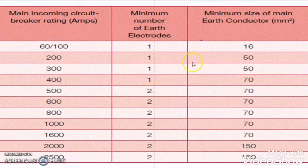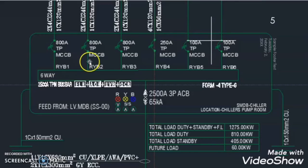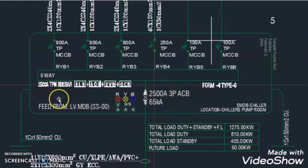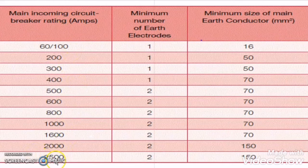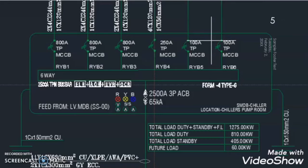Let us take some examples in order to select the minimum size of the main earth conductor. Here is the first example. The main incomer rating of this LV panel is 2500 ampere. So as per this chart, when the main incomer breaker rating is 2500 ampere, then two pits are required and the size of the main earth cable will be 150 square mm. This is the pit symbol, and the minimum size of the cable here is mentioned as 150 square mm copper cable.